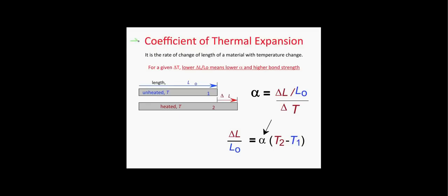The coefficient of thermal expansion is one of the three properties directly related to a material's type of bonding, and it is a rate of change of length of a material with temperature change. It is represented by alpha. Here is how you would mathematically solve for it: it is the change in length divided by the change in temperature times one over the original length — in other words, the fractional change in length per degree of temperature change.